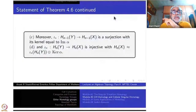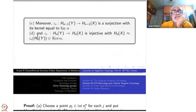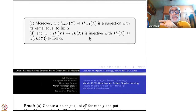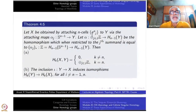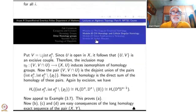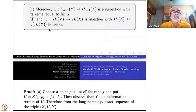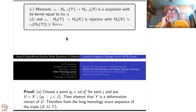Statement D says that in homology, H_N(Y) to H_N(X) is injective. So H_N(Y) will be a subgroup of H_N(X), and H_N(X) itself is isomorphic to this subgroup direct sum with the kernel of alpha. So the kernel of alpha — a subgroup of the direct sum — is one component of H_N(X), and the image of i_* is the other component. This gives a complete picture of the homology of X in terms of the homology of Y.